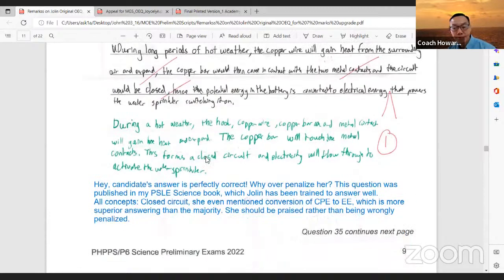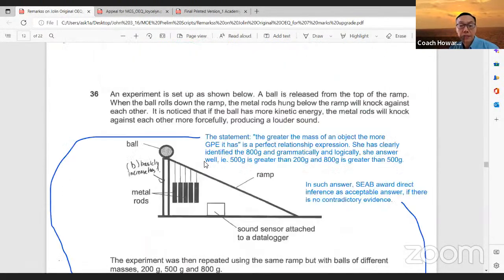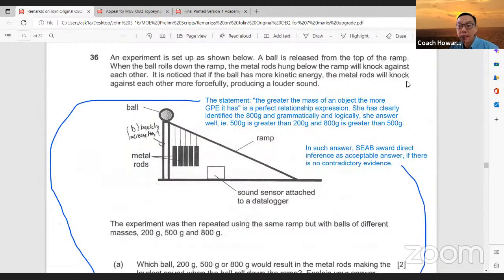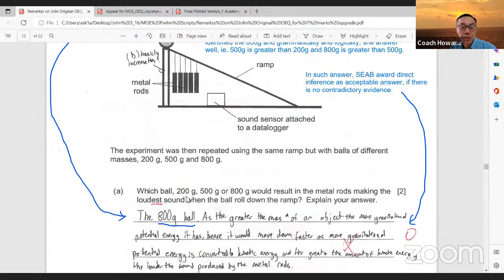As examiners, as professional educators, we need to be more open minded because MOE is also moving towards adopting a more open minded approach in accepting students reasonable answer. As long as the answer is reasonable, does not contradict any scientific theory or concept, the student should be awarded the full marks.